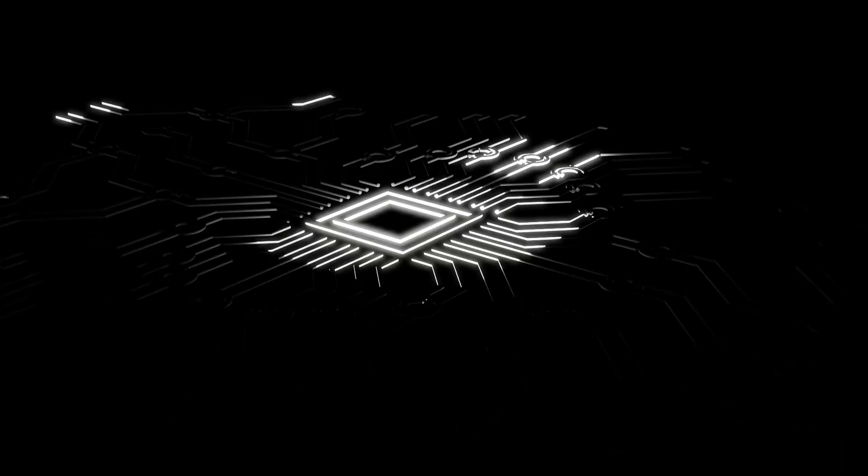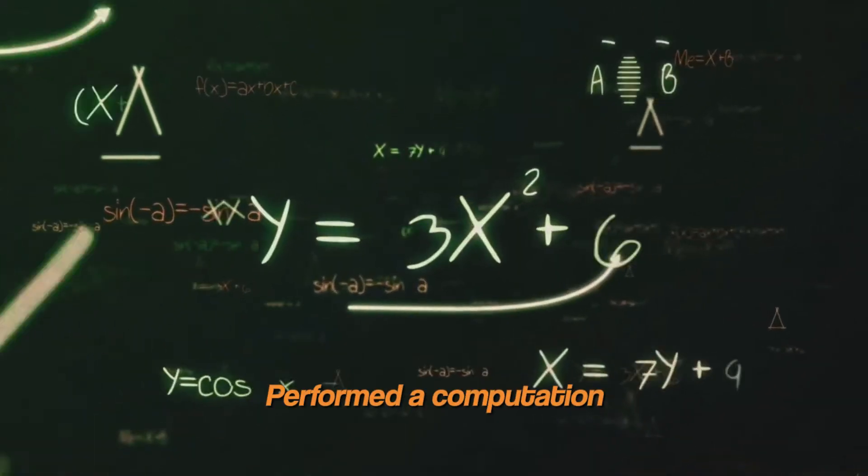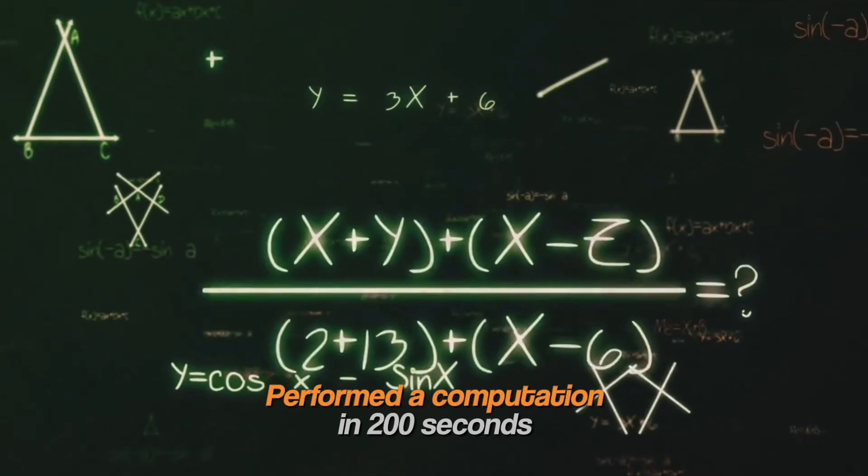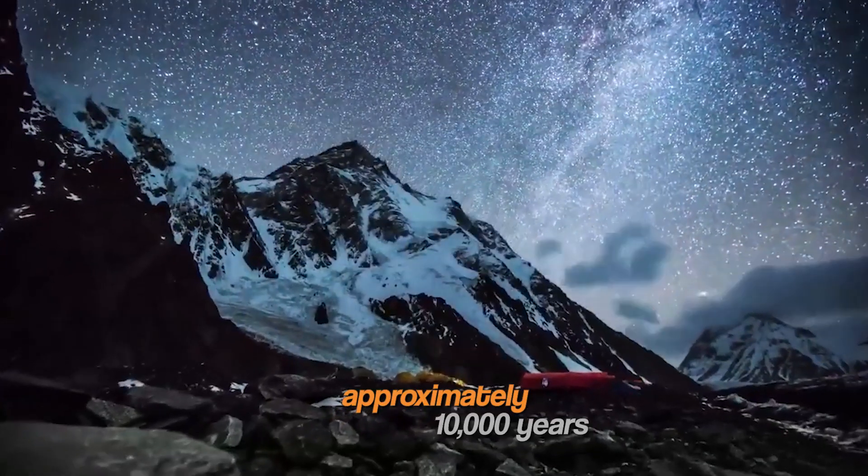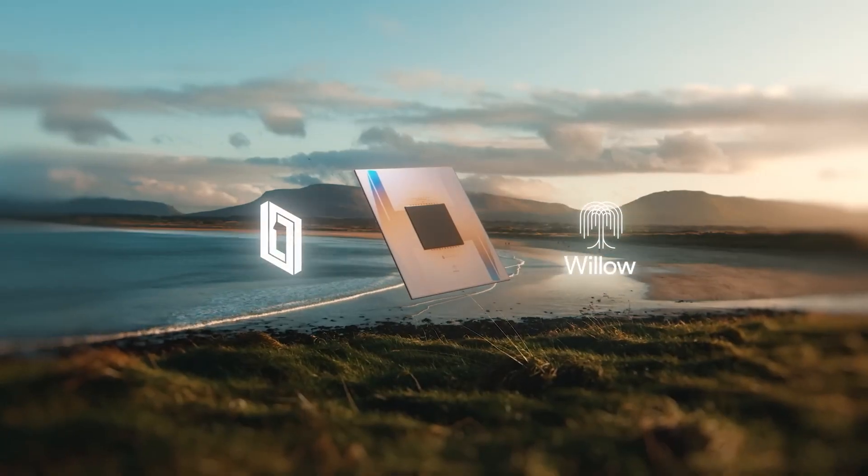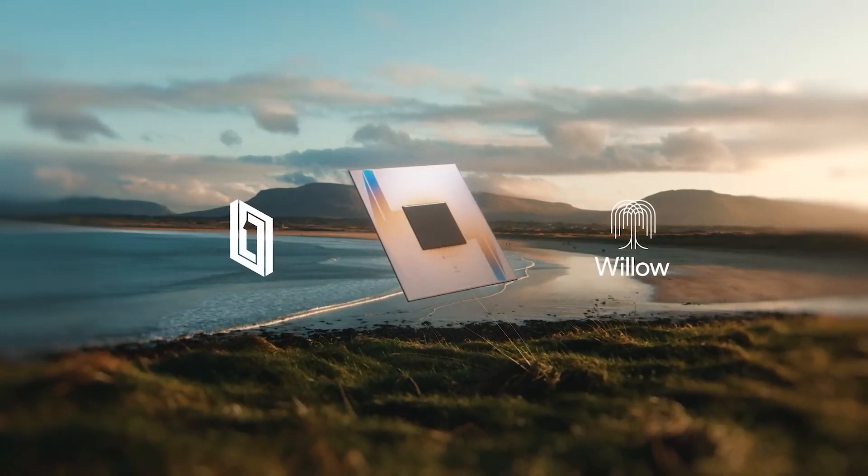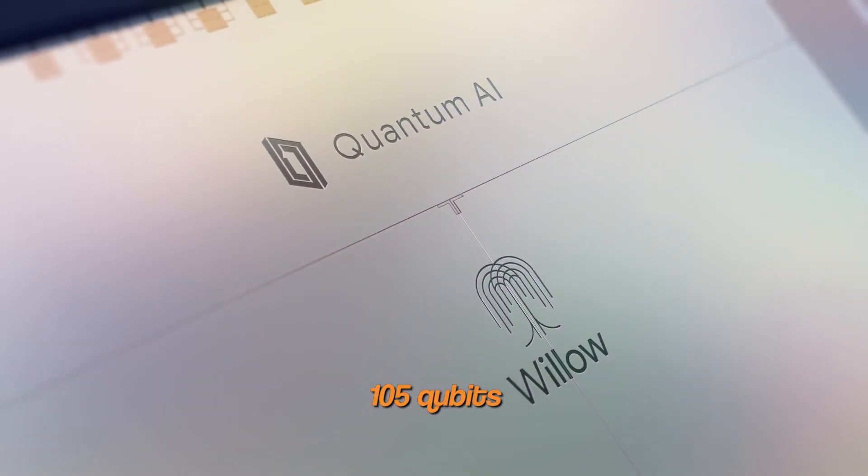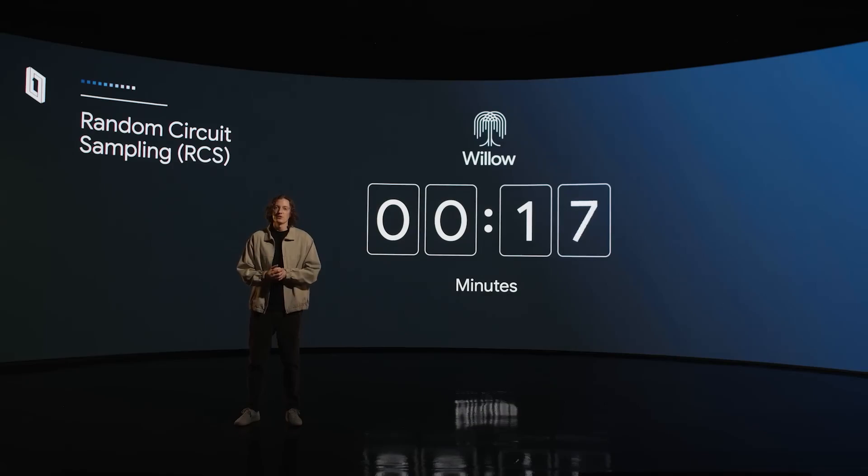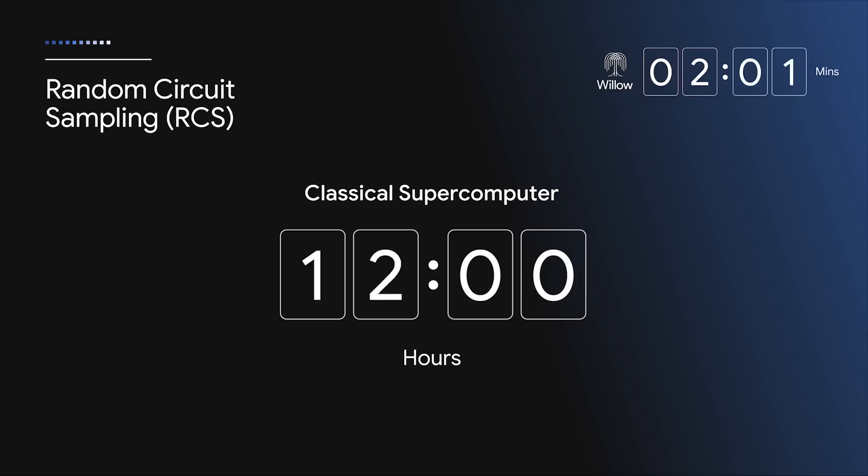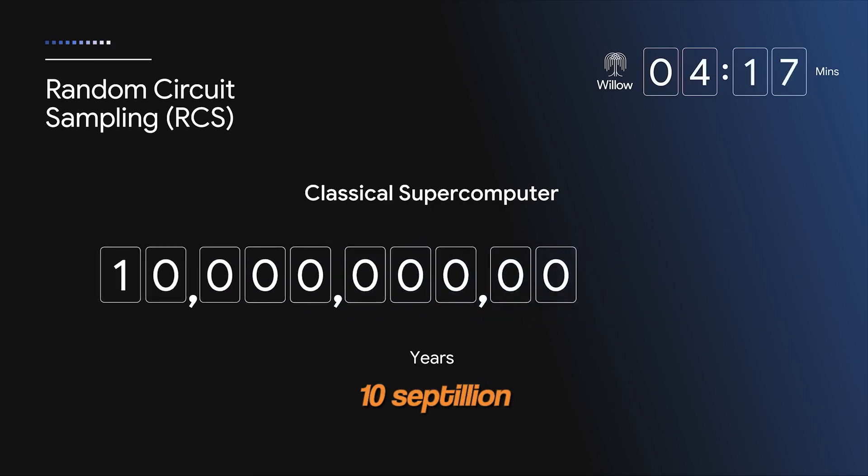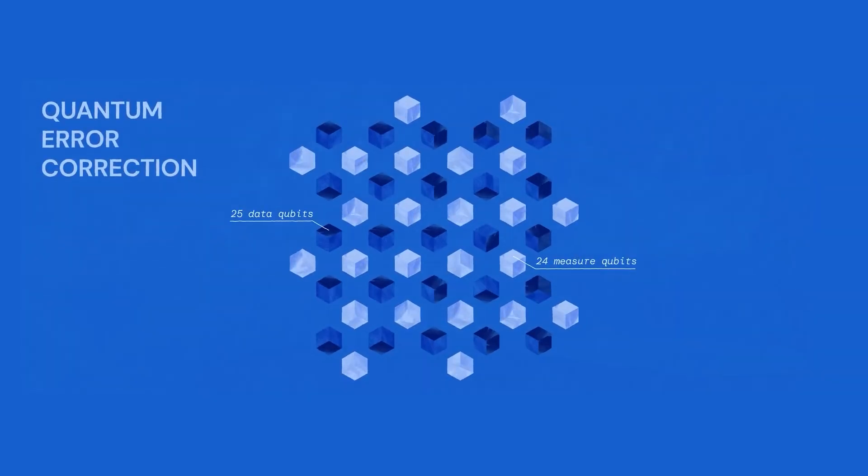In 2019, Google introduced its first significant quantum processor, Sycamore, which performed a computation in 200 seconds that would have taken a classical supercomputer approximately 10,000 years. Fast forward to December 2024, Google unveiled Willow, a more advanced quantum chip featuring 105 qubits. Willow completed a computational task in under five minutes—a task that would have taken the fastest classical supercomputers an estimated 10 septillion years.